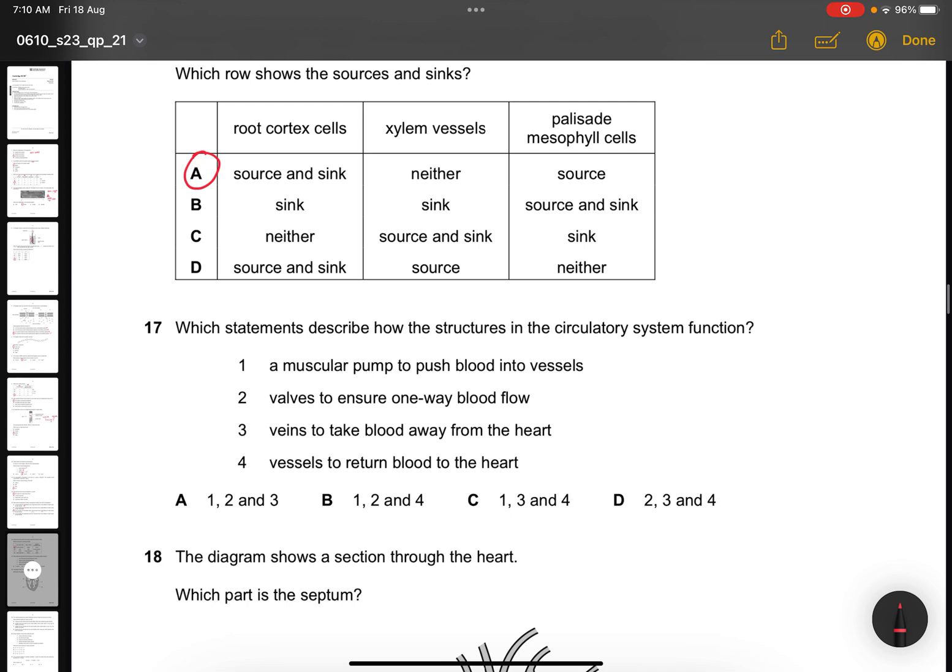Question 17. Which statement describes how the structures in the circulatory system function? The answer for this one will be B. Muscular pump pushes blood into vessels, correct. Valves ensure one-way blood flow. Vein to take blood, no, it should be towards the heart. And vessels return the blood to the heart, correct.